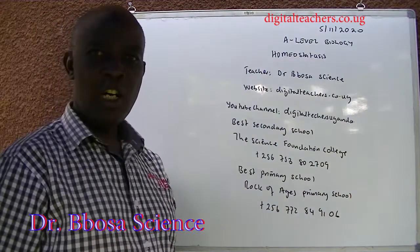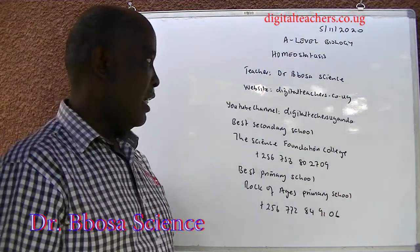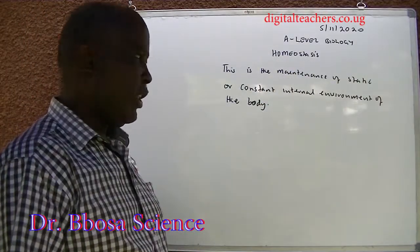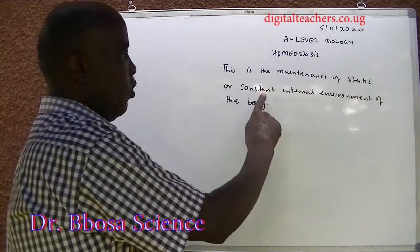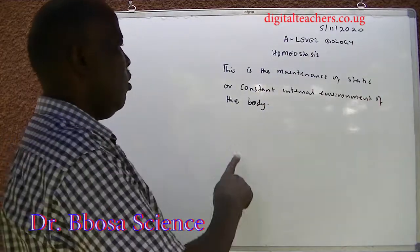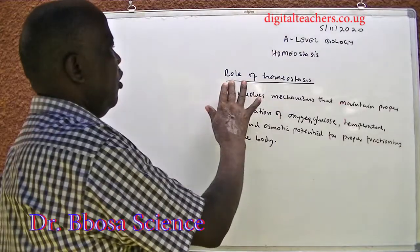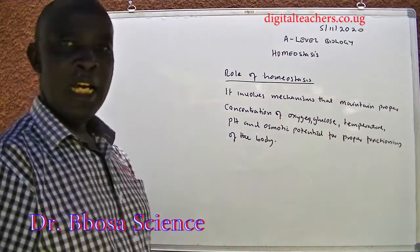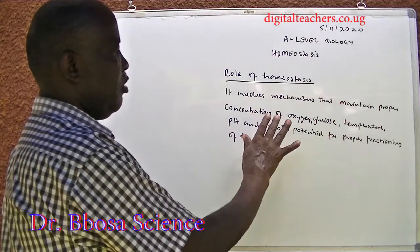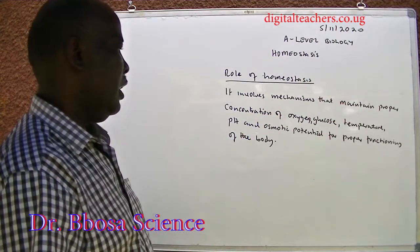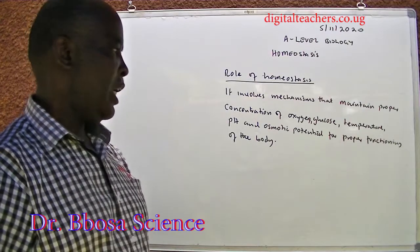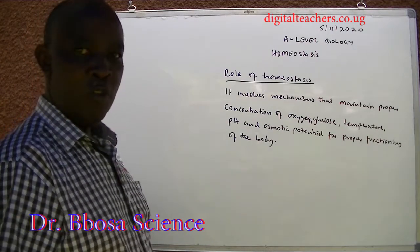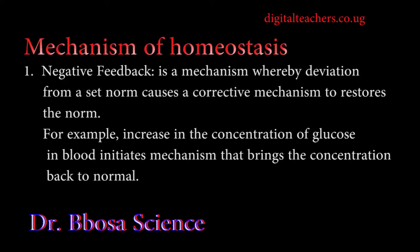Today, 5th November 2020, we are going to look at homeostasis at A-level. Homeostasis is the maintenance of a static or constant internal environment of the body. The role of homeostasis involves mechanisms that maintain proper concentration of oxygen, glucose, temperature, pH and osmotic potential for proper functioning of the body.